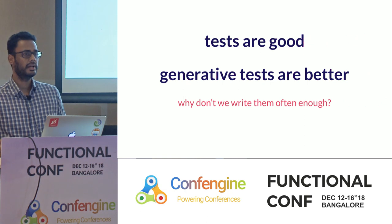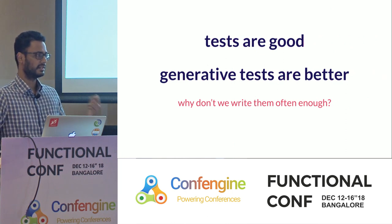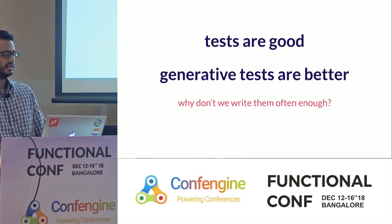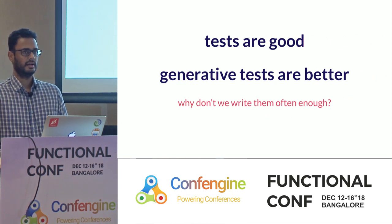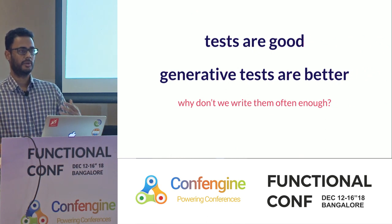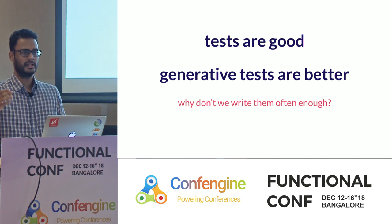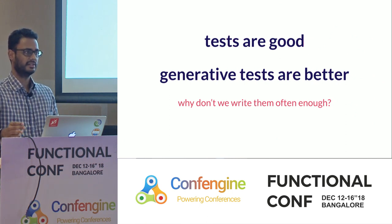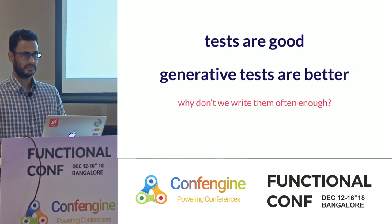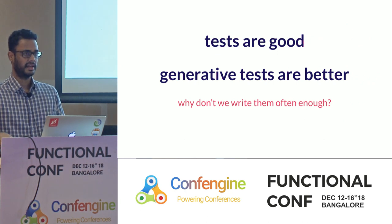When I ask people what they've written with QuickCheck, the common answer is: unit tests, function-type things, data structures and algorithms. But often people get stuck thinking about what the right properties are to test beyond that. It's easy to think about circular buffers and sorting algorithms, but what about login or authentication, or adding something to a database? Those are stateful systems — talking to a database, a third party. This is the software most people write on a day-to-day basis.